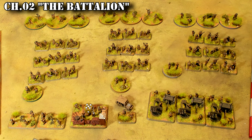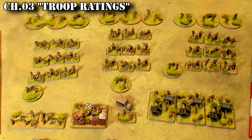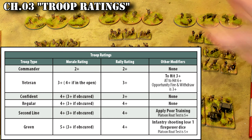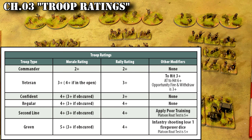Let's jump to chapter three — troop ratings. Each troop is given a rating. The standard most common troop rating is 4+, which is the score on a single die you have to roll to pass your morale test. Lower the rating, the better — so a 2+ is easier to pass than 4+. If you roll under the rating, you fail.